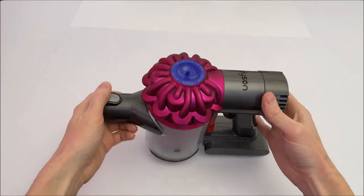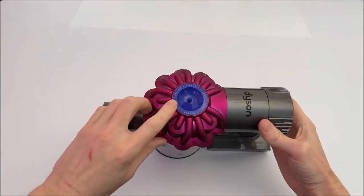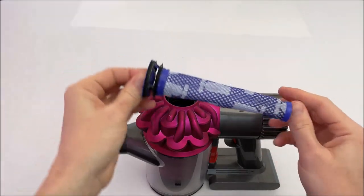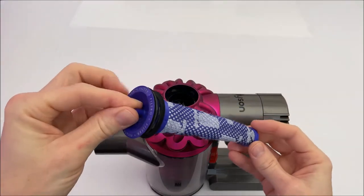The first thing we need to do is remove the filter from the top. Simply lift the filter up and out. If you are experiencing surging problems or the vacuum shutting off after a short period of time, this is probably the cause.